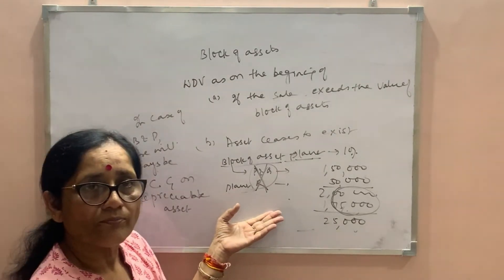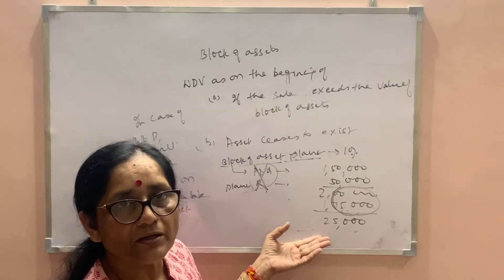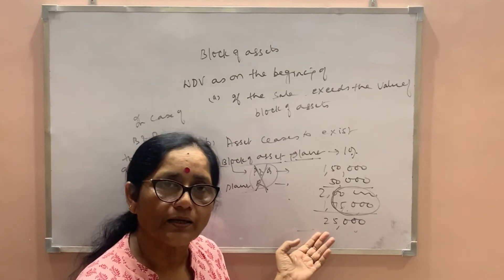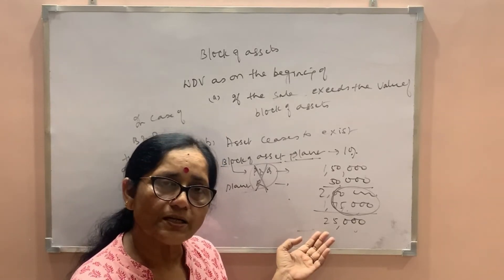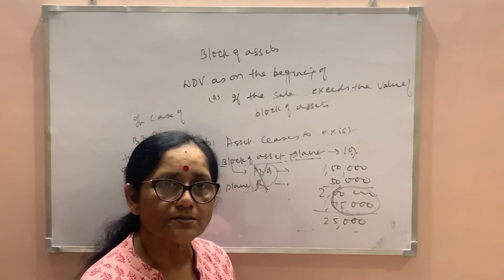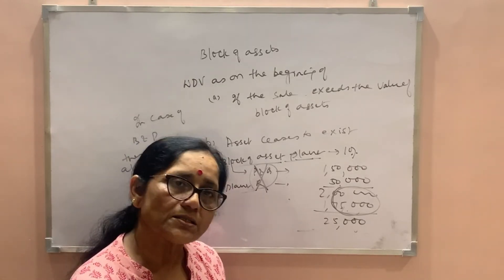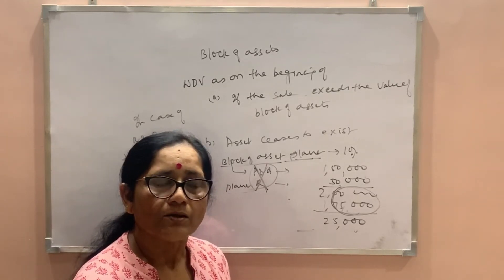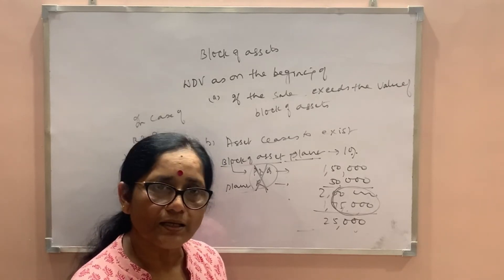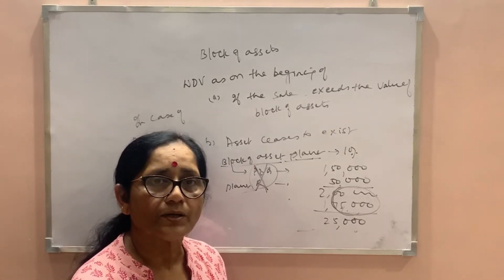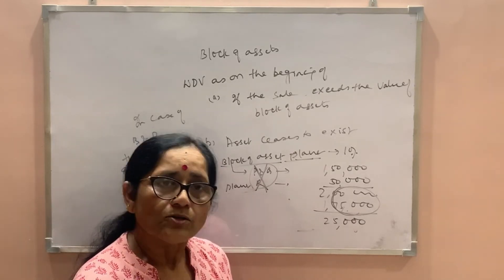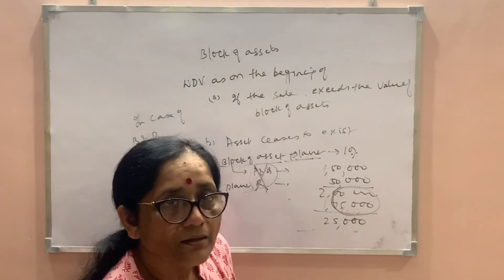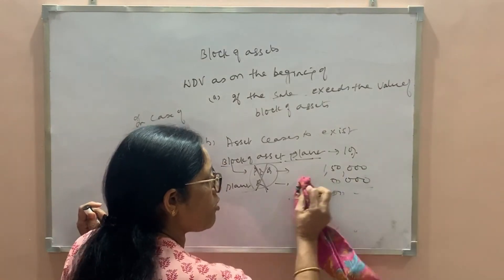When all assets are sold, or when one asset is sold at such a higher figure that it covers the entire value of the block, there will be short term capital gain. In the second circumstance, if all assets are sold at a lesser figure so that value remains but no asset is left in the block, there will be short term capital loss. This only happens in the case of depreciable assets.